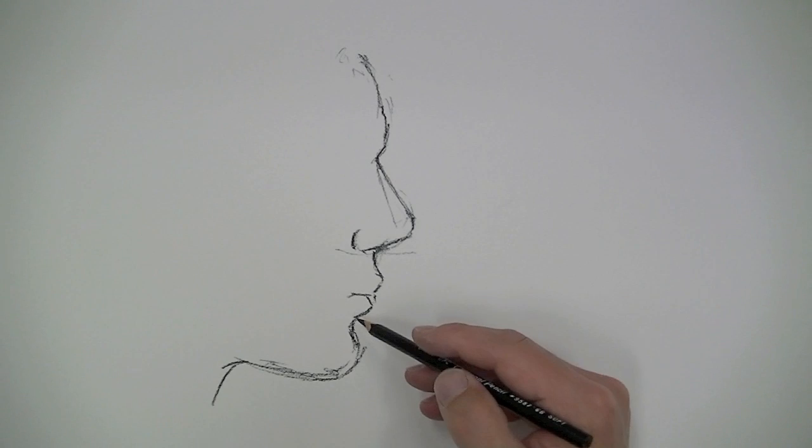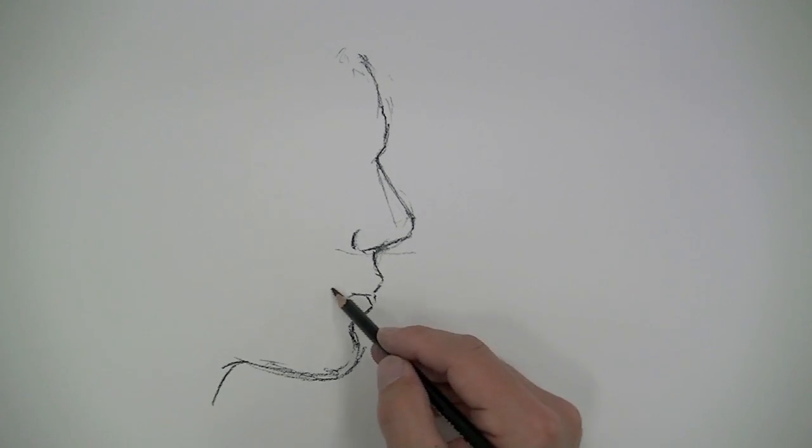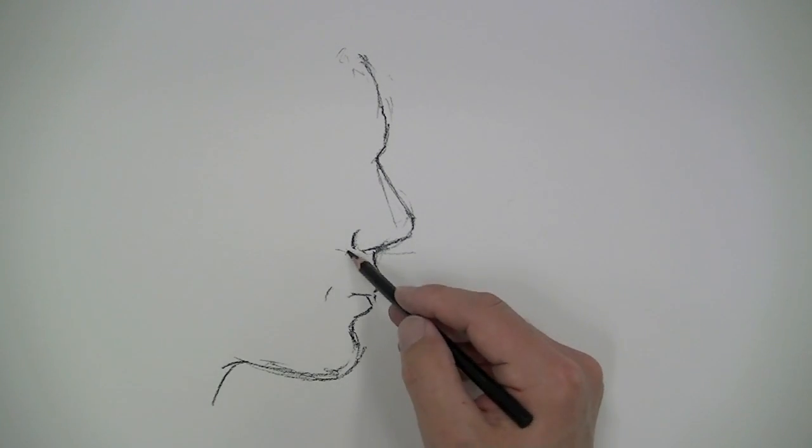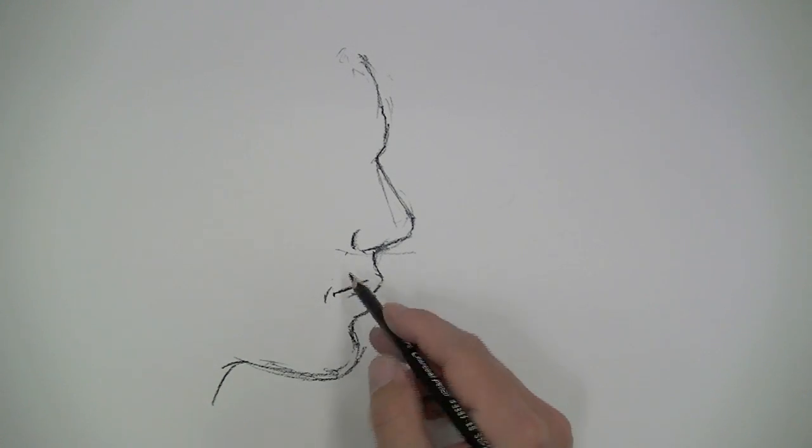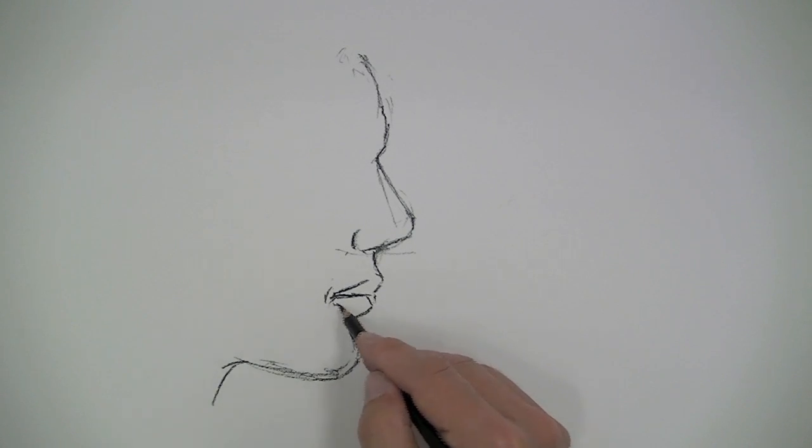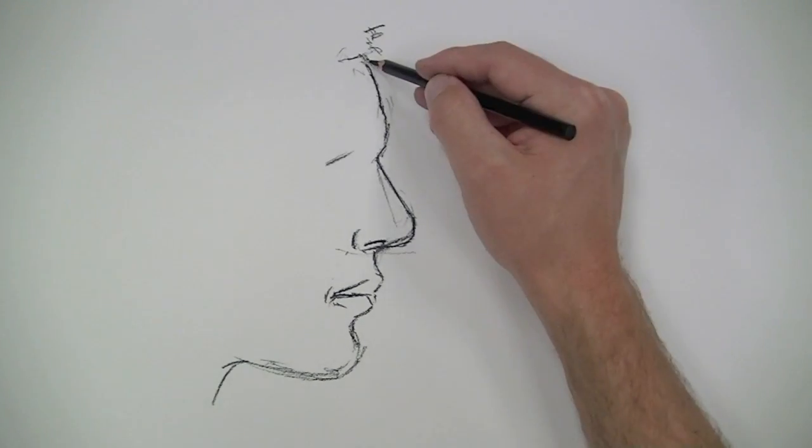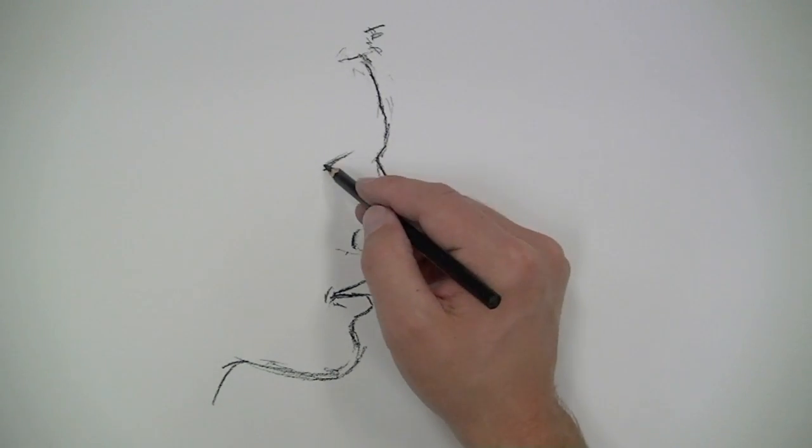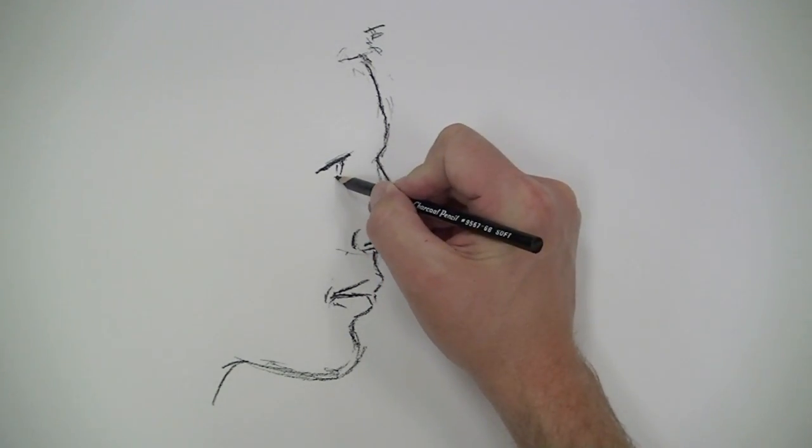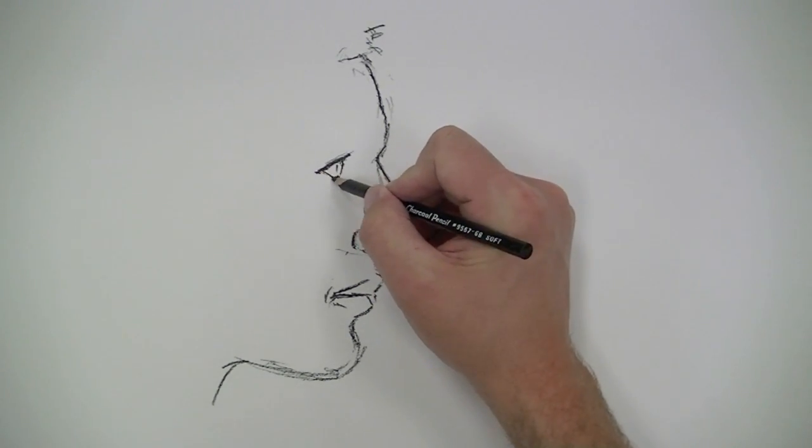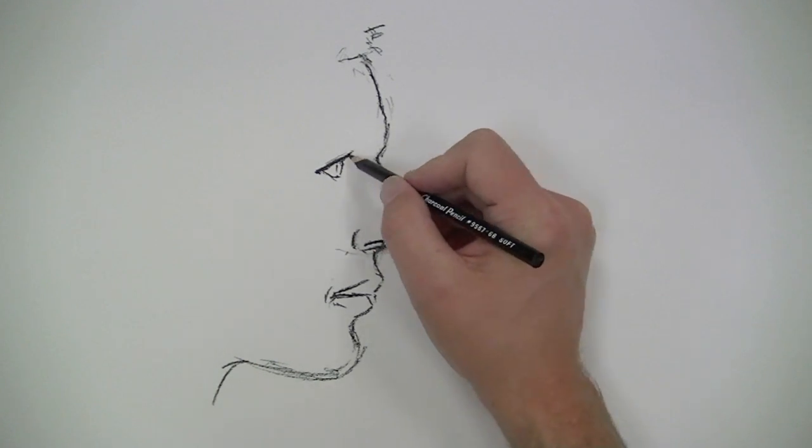I'm going to begin by just lightly drawing out the contour lines of the portrait using a charcoal pencil which has compressed charcoal inside of it. So the mark is going to be pretty dark here. I'm just going to concentrate on the areas of contrast that I see. I'm also going to draw pretty loosely here. I don't want to be too obsessed with the details. I want my lines to be very loose.